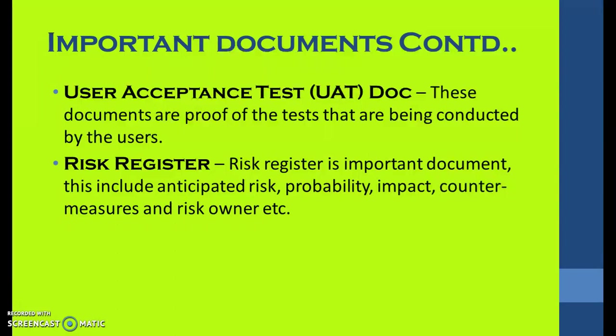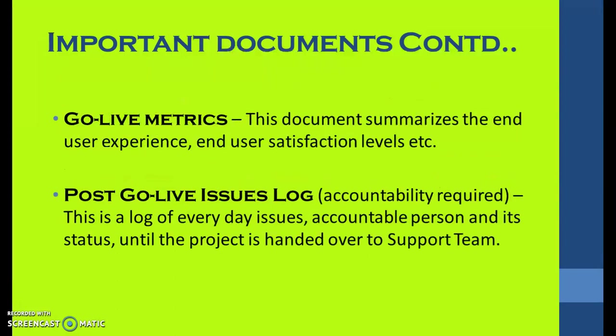The Risk Register is an important document that includes anticipated risks, probability, impact, countermeasures, and risk owner. Go-Live Metrics summarizes end-user experience and end-user satisfaction. The Post Go-Live Issues Log requires accountability and is a log of everyday issues, the accountable person, and their status until the project is handed over to the support team.